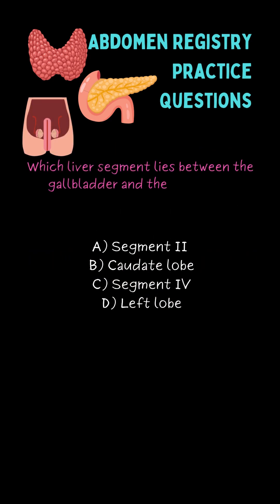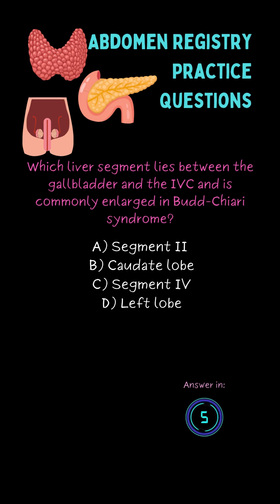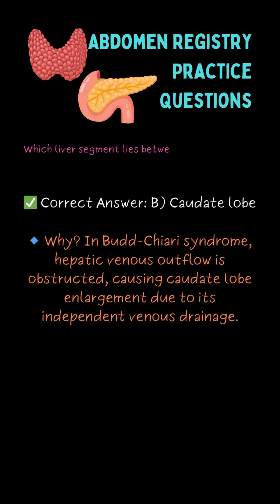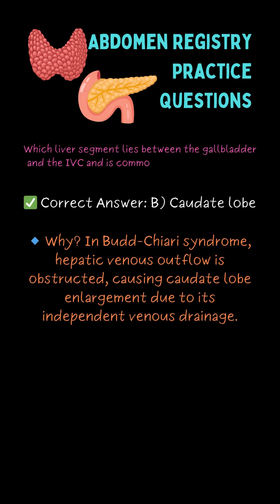Which liver segment lies between the gallbladder and the IVC and is commonly enlarged in Budd-Chiari syndrome? B. The caudate lobe.